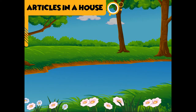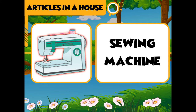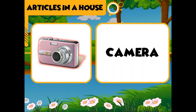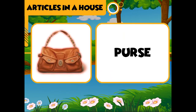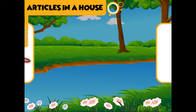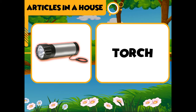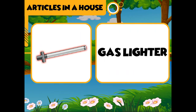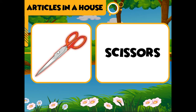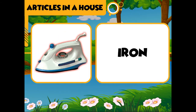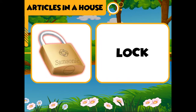Articles in a house: sewing machine, camera, purse, torch, gas lighter, scissors, iron, lock.